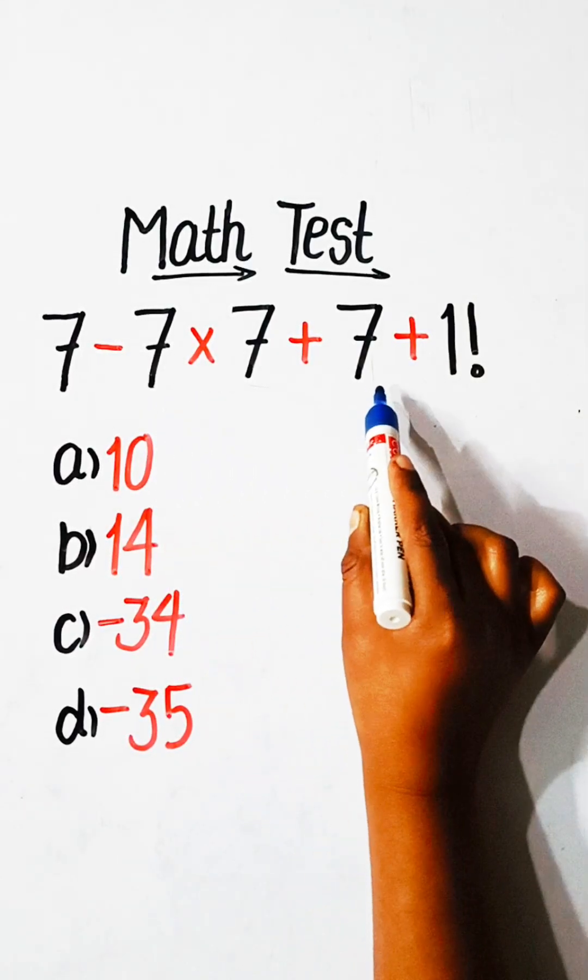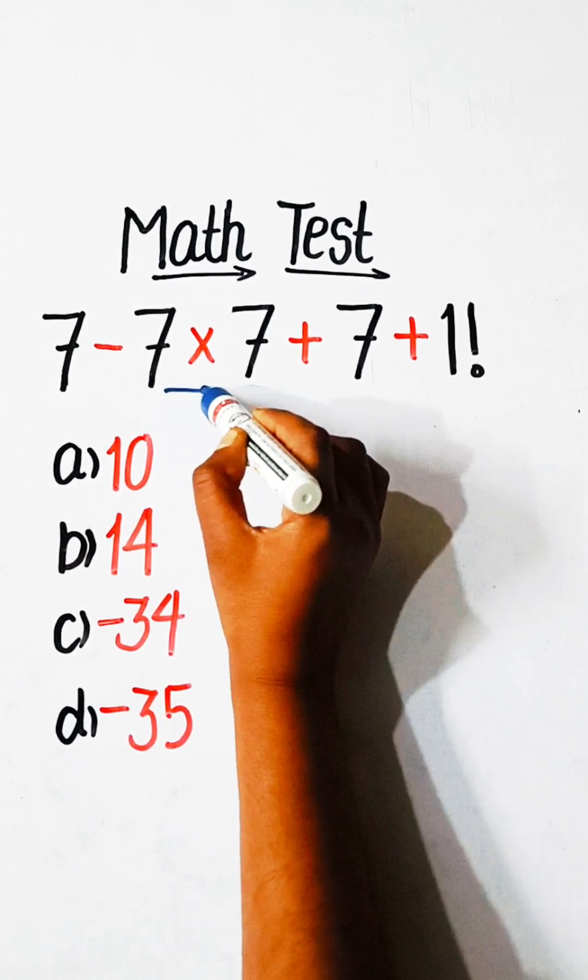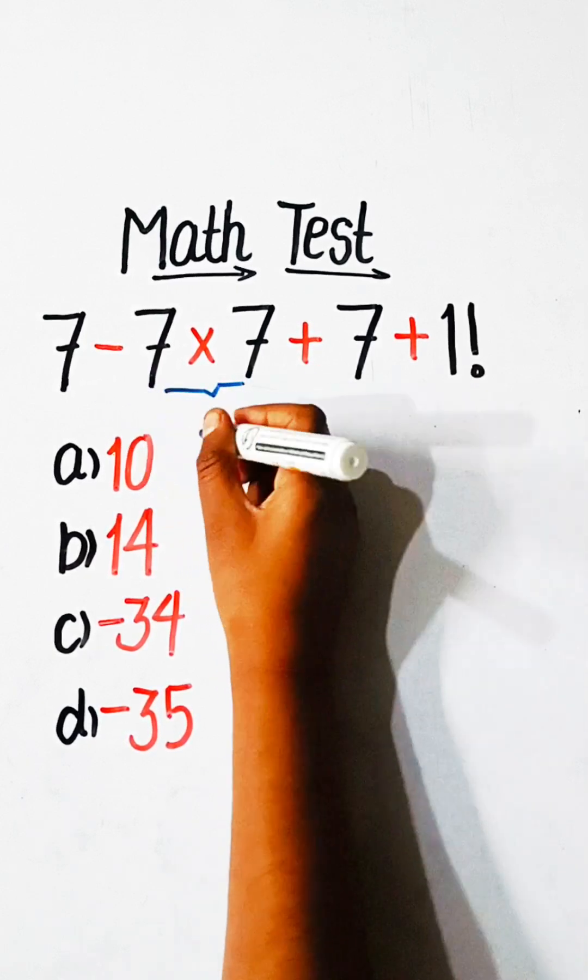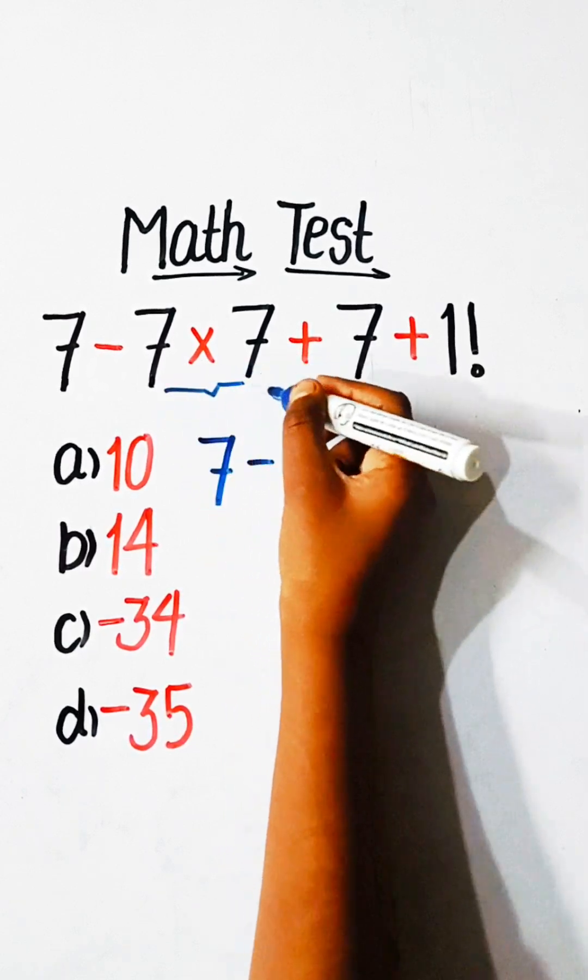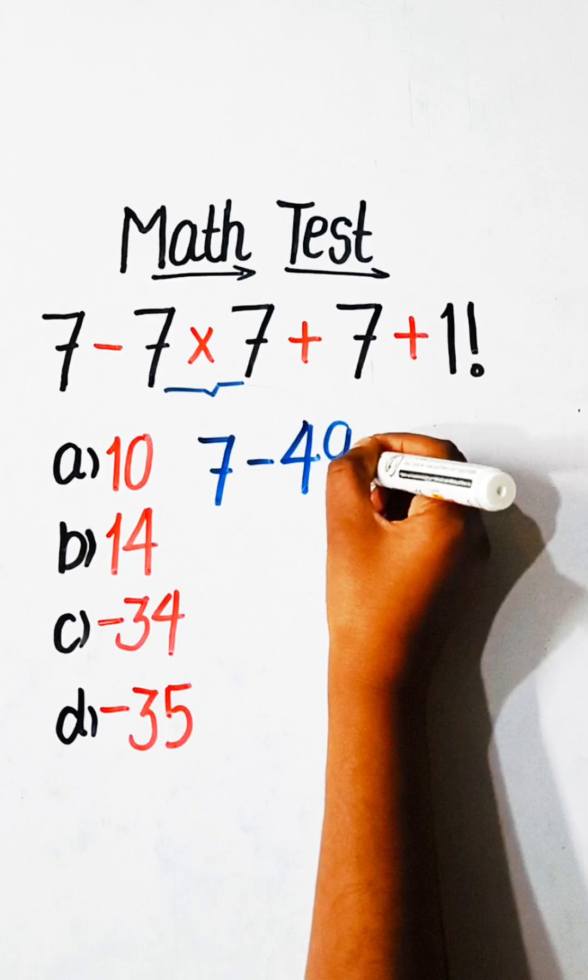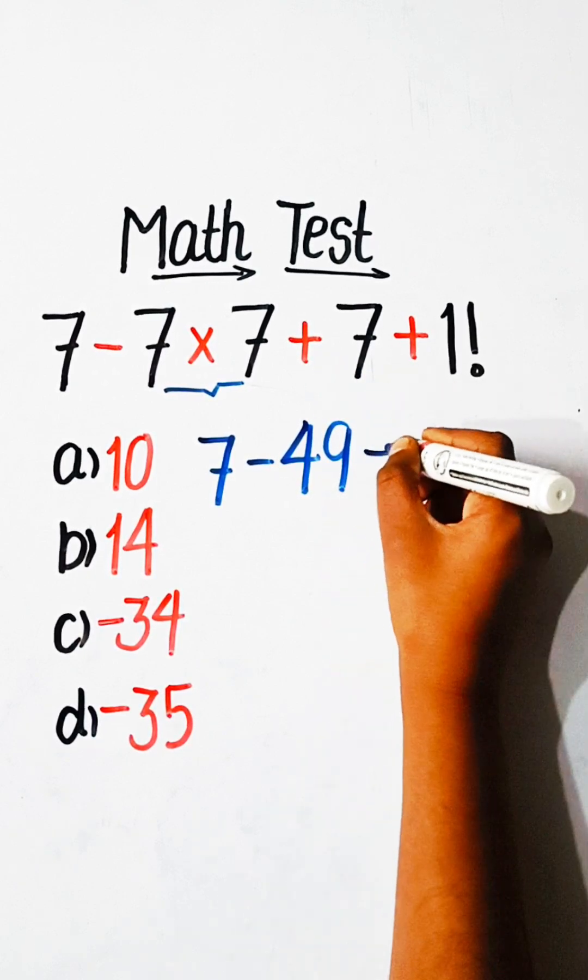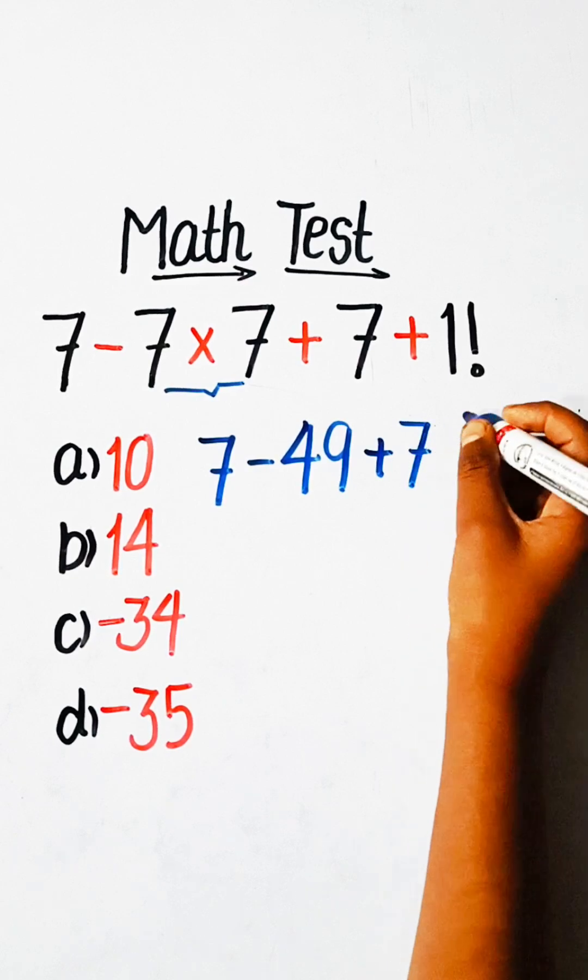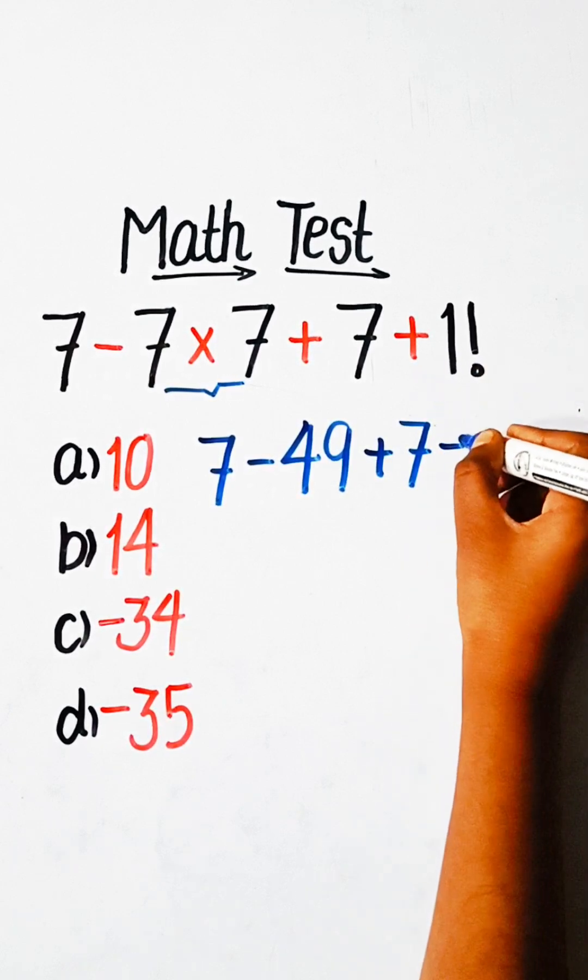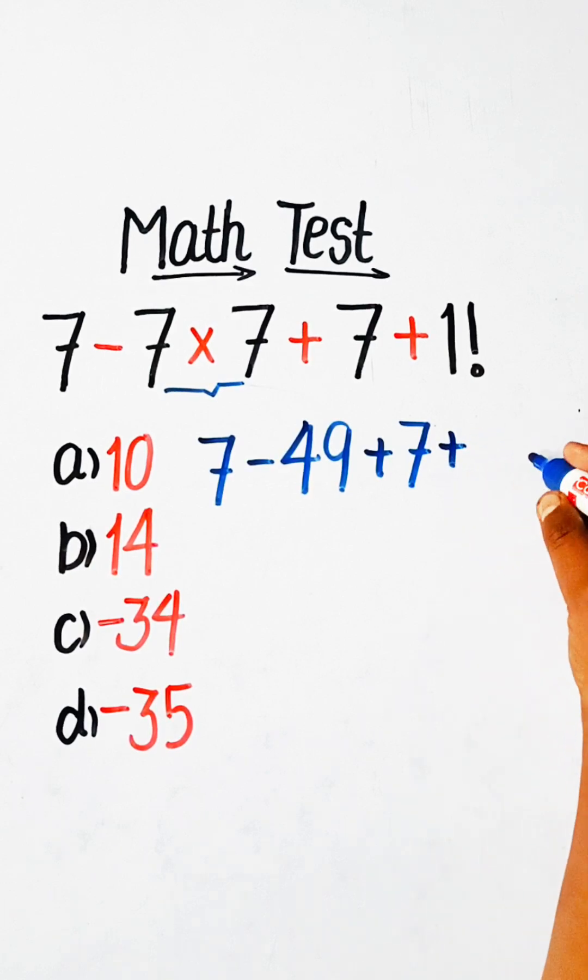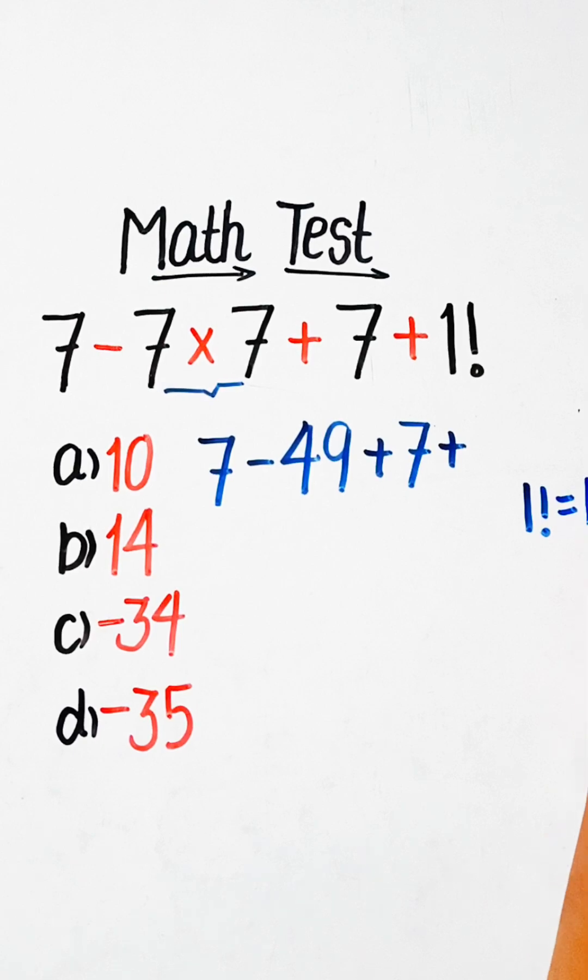In this equation, first of all we have to solve multiplication. So we will write here 7 minus 7 times 7. 7 sevens are 49, plus 7 plus 1 factorial. The value of 1 factorial equals 1, so we will write here 1.